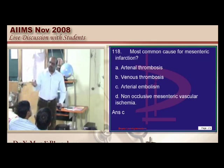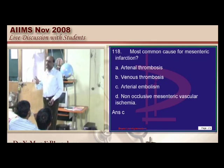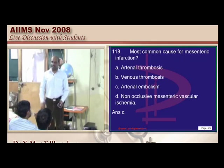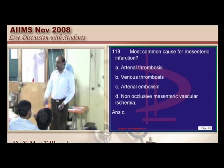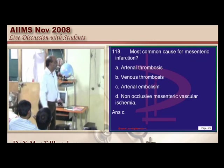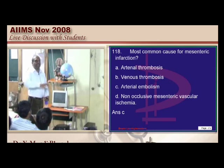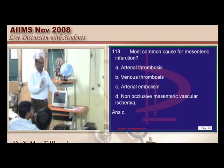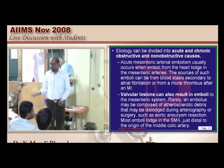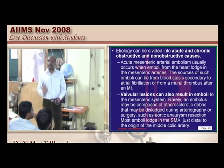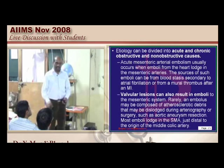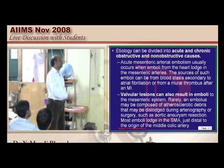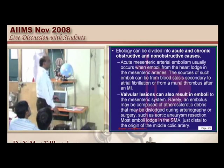Mesenteric occlusion ischemia is divided into acute and chronic. Acute is most commonly caused by embolism. There is also non-occlusive mesenteric ischemia where severe hypotension decreases perfusion to mesenteric tissue. Out of all causes, embolism is the most common.